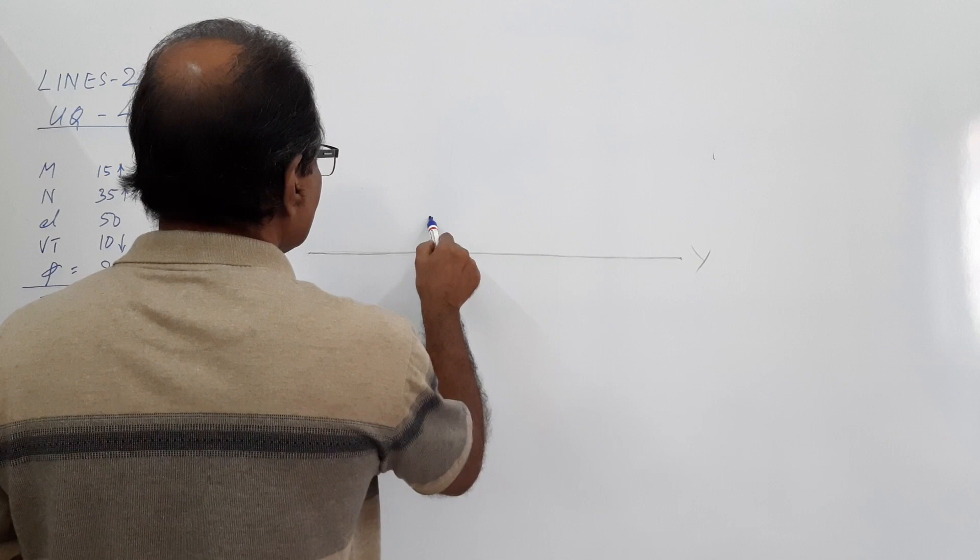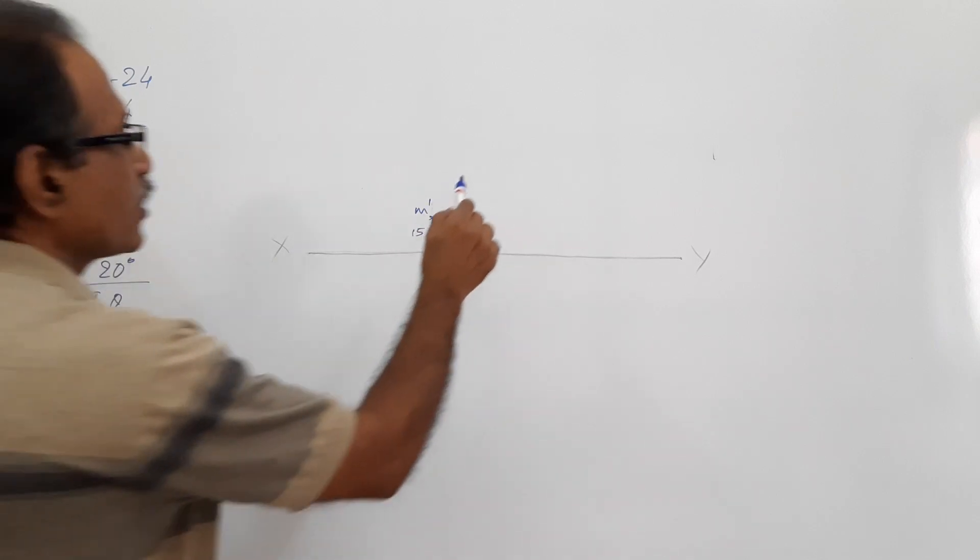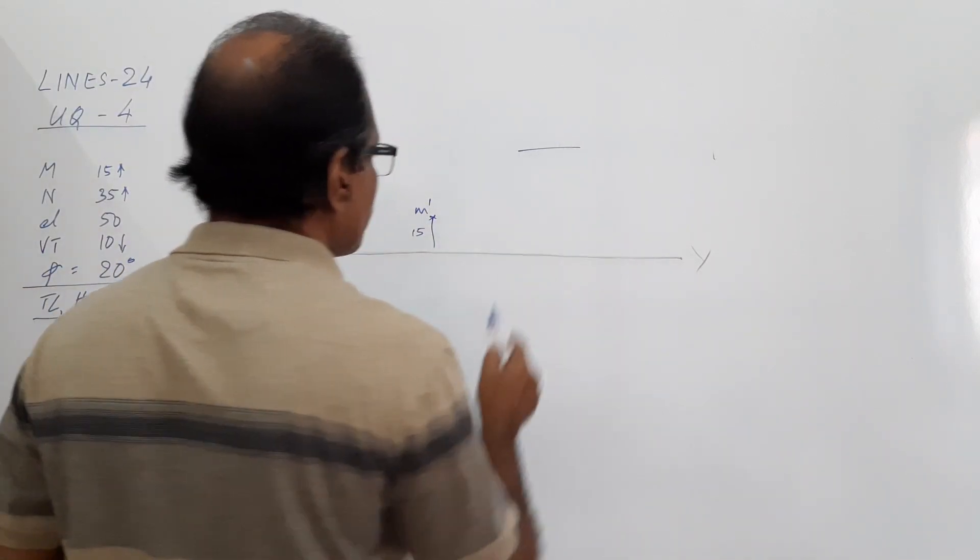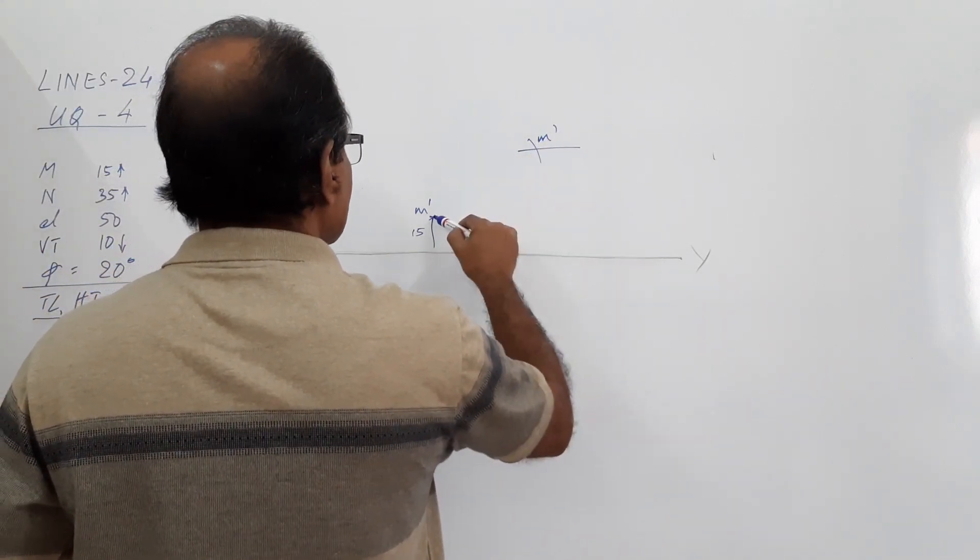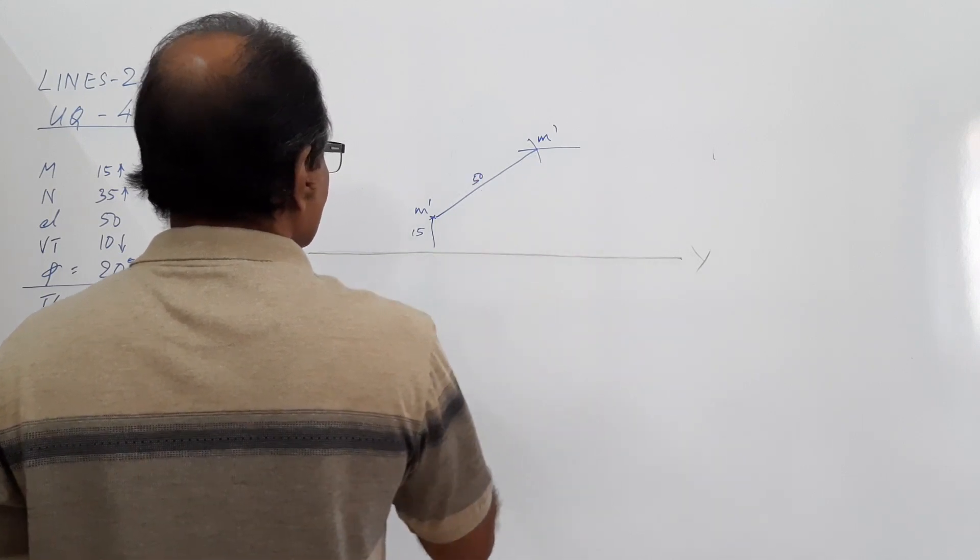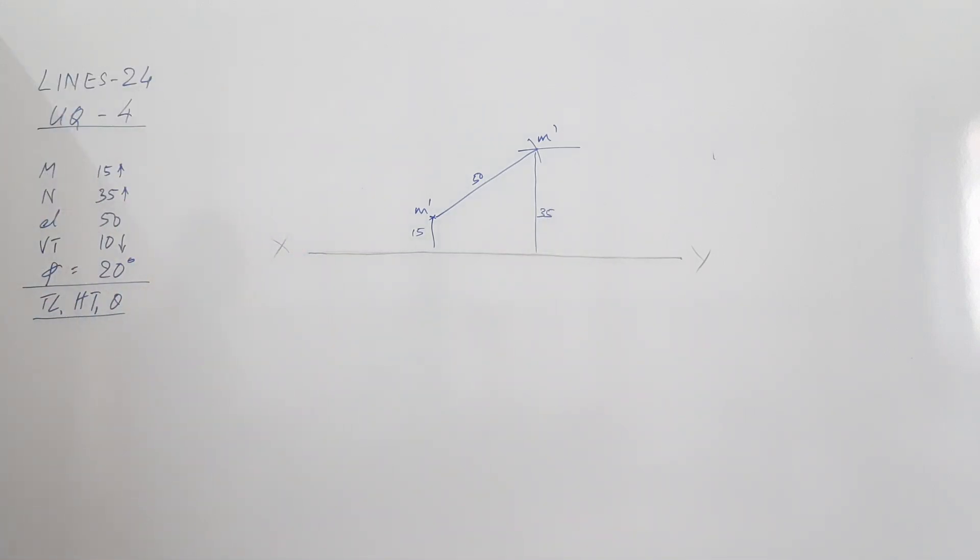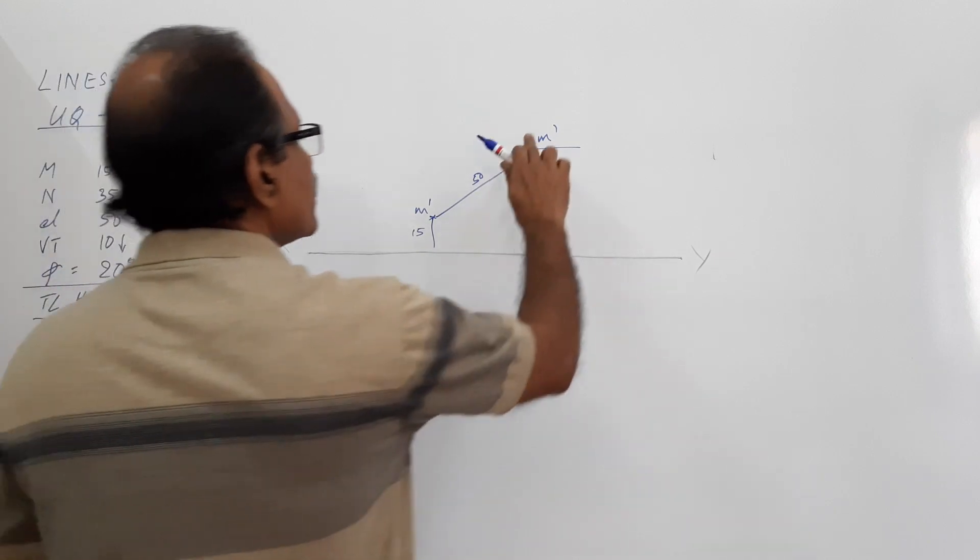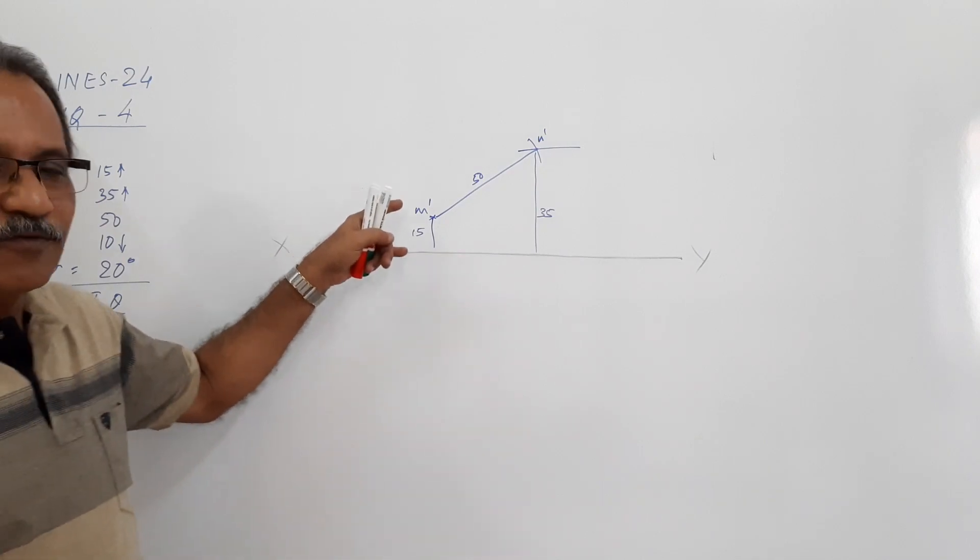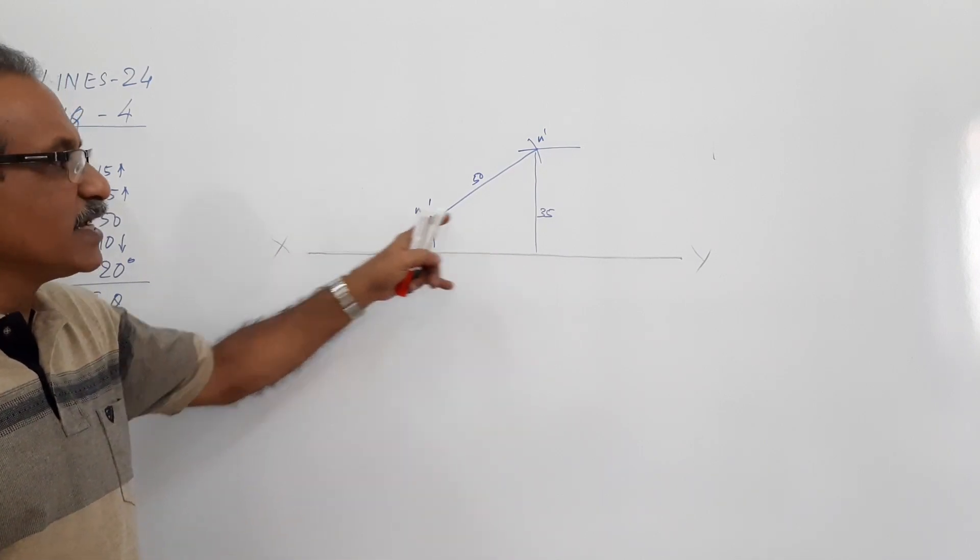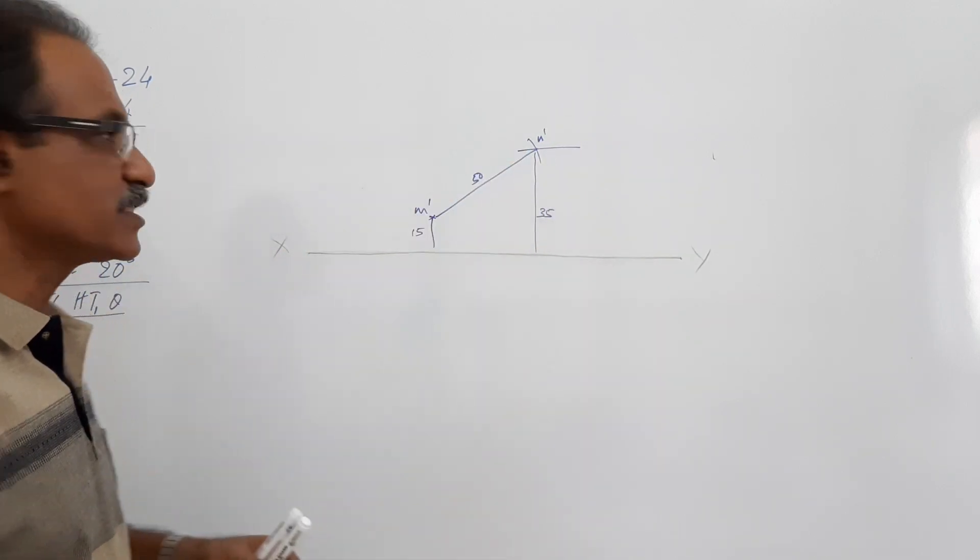Draw XY. M is 35 mm - draw a horizontal line 35 mm away. Take the elevation length and cut. M dash is 15.